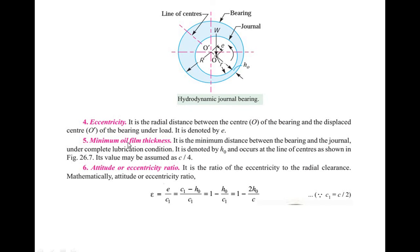The next term is minimum oil film thickness. It is the minimum distance between the bearing and the journal under complete lubrication condition. It is denoted by h0 and occurs at the line of centers as shown in the figure. Its value is assumed to be c by 4. As a design engineer, our responsibility is to ensure that this oil film thickness is maintained and should not be less than h0 for proper working of the journal and bearing system.